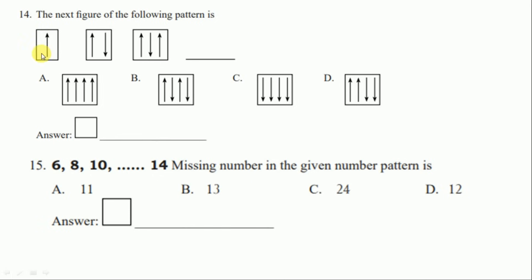Question number fourteen: the next figure in the given pattern. In this pattern, the first figure has one ray pointing upward. In the next figure, one extra ray is added pointing downward. These two features repeat — so the next figure should have rays pointing upward and we add one more ray pointing downward.